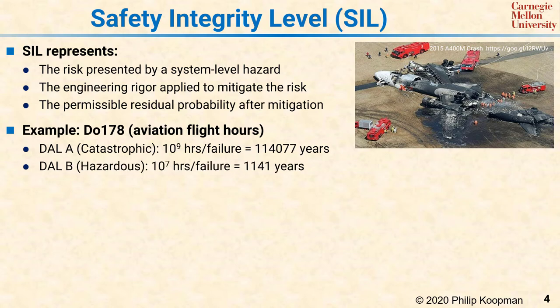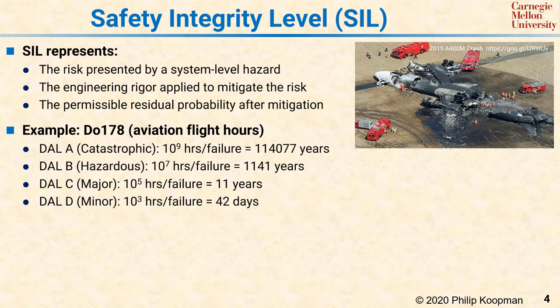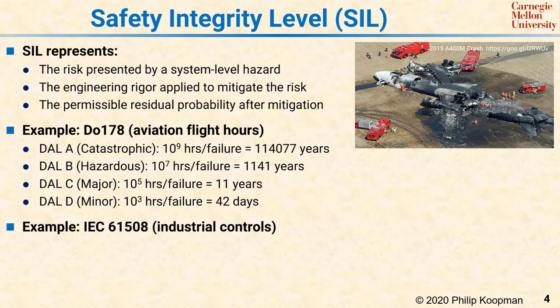DAL-B, which is a hazardous event, is permitted to happen 100 times more frequently, or about every 1,100 years. Major and minor incidents are again allowed to happen with multiples of 100 times more frequently each. The context for major and minor events is that a trained flight crew is available and is very likely to recover from or minimize any impact to humans when these types of events happen.